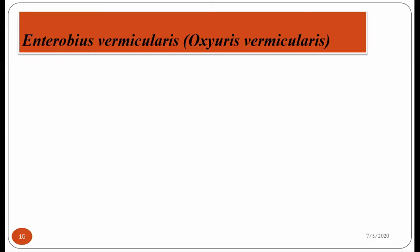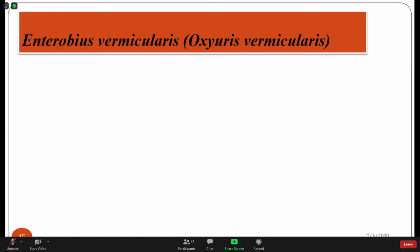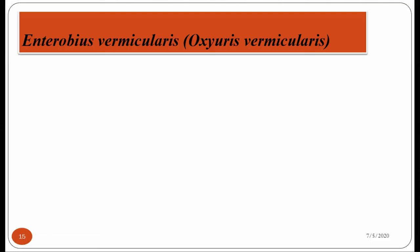Hello, good morning. Today's topic is Enterobius vermicularis. These are the worms that can be found in the large intestine of human beings. These Enterobius vermicularis were previously known as Oxyuris vermicularis because the adult female worm has a posterior end that is very thin, like the shape of a pin. That's why, before, they were called Oxyuris vermicularis. Thus, the common name pinworm was given to Enterobius vermicularis.